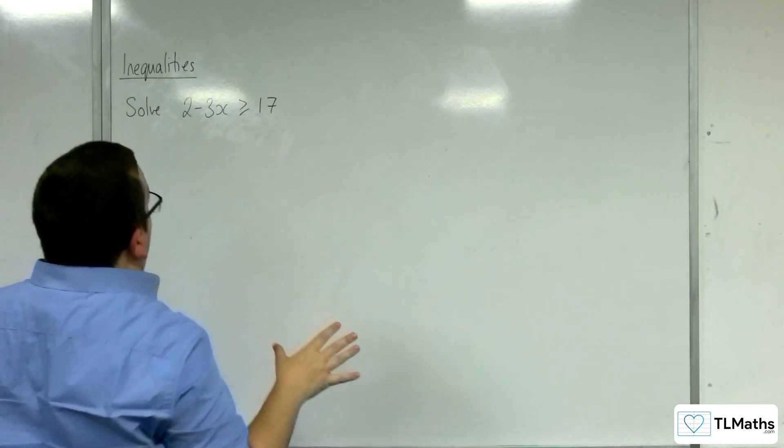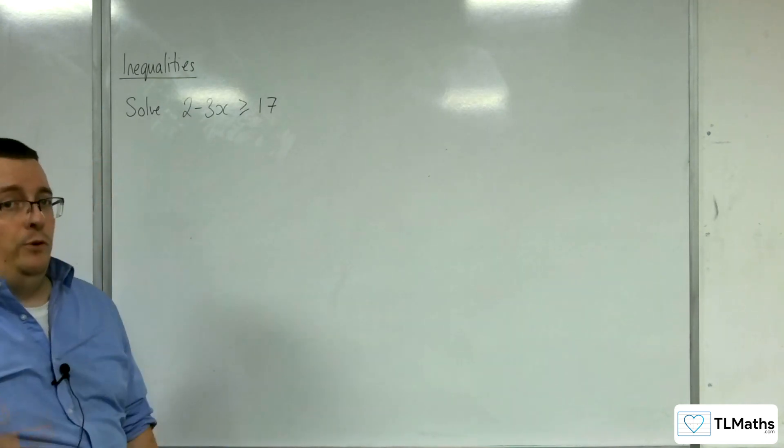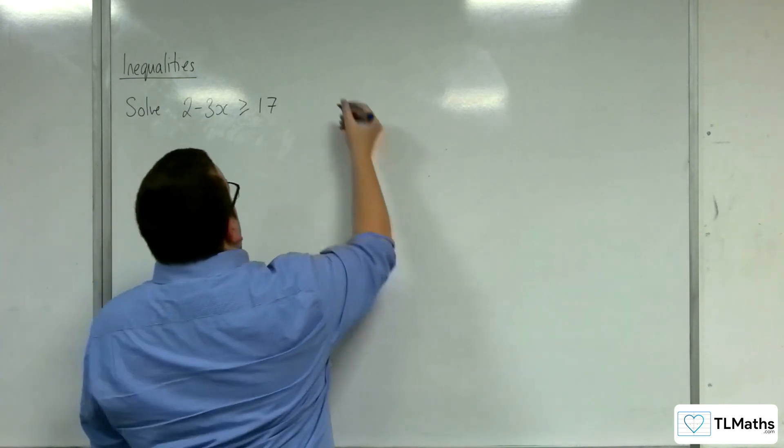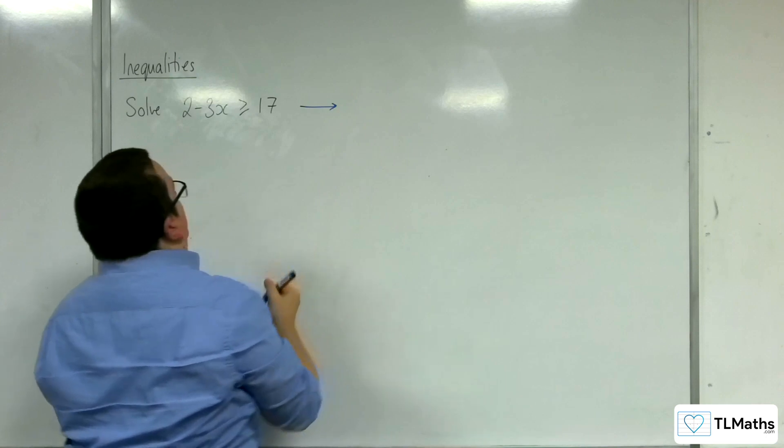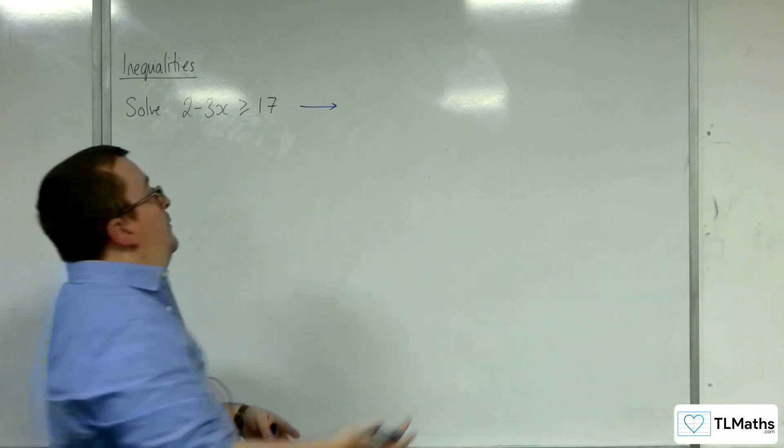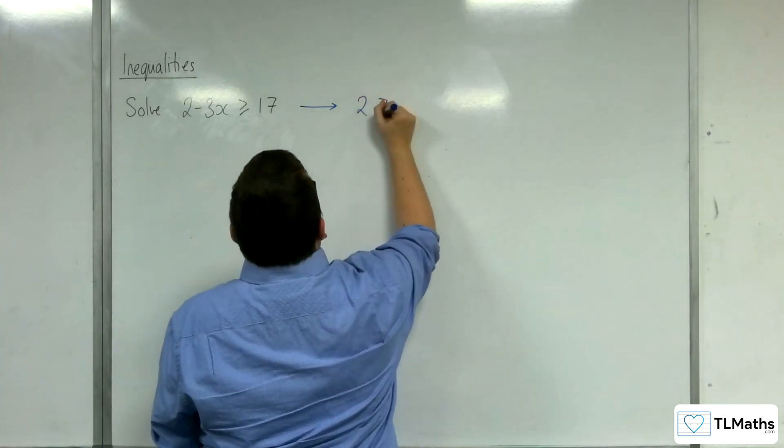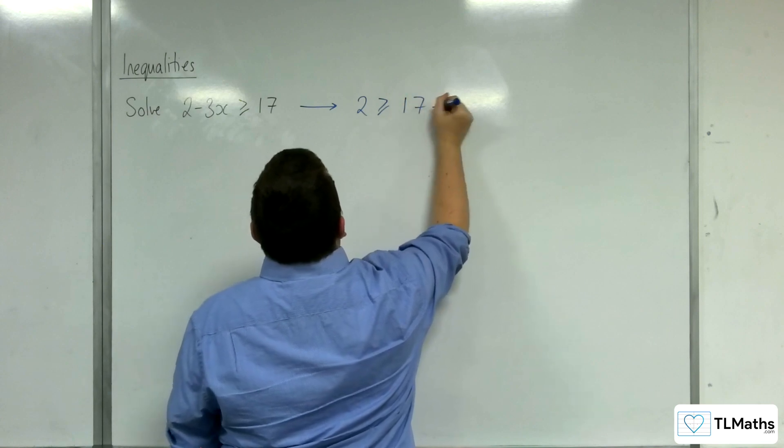So, there's a couple of different ways of doing this. It really depends on how you were taught. Now, one way that you can do this is by adding the 3x to both sides. So, 2 is greater than or equal to 17 plus 3x.